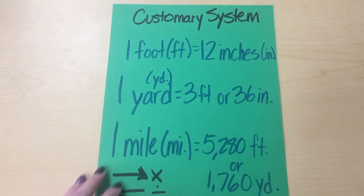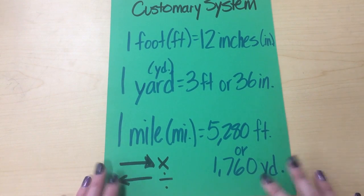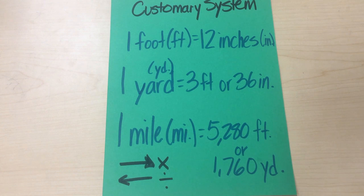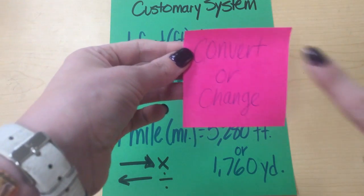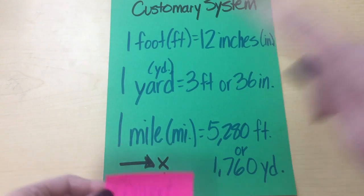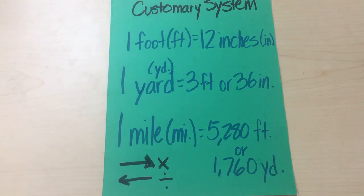Okay, so this is the customary system. We use it a lot here in the United States, and it's a lot harder to switch from one thing to the next. But this chart will help you a lot. I'm actually going to send a screenshot of this to your teacher so you'll have this to use on your assignment. Remember, we're going to use this chart to convert or change one unit to the next. So let's talk about some of our customary units.